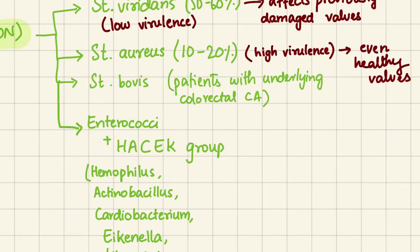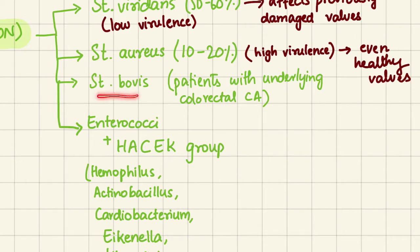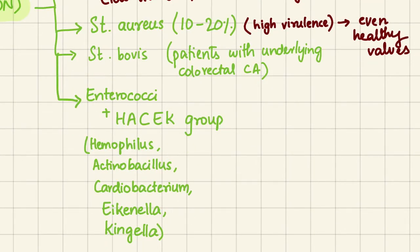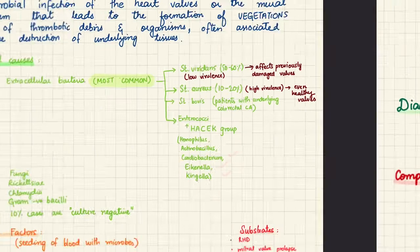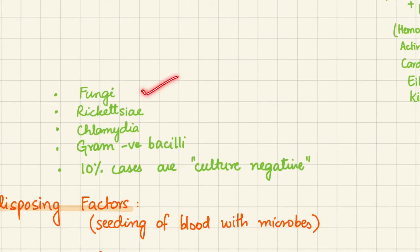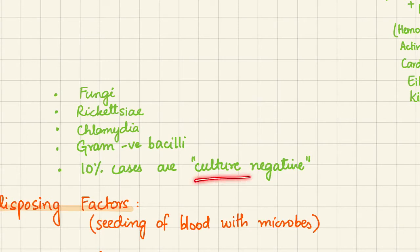Staph aureus is responsible in 10 to 20 percent of cases. It is a highly virulent organism and can damage even healthy valves. Next we have Strep bovis, which affects patients with underlying colorectal carcinoma. Enterococci and the HACEK group are another causative agent — HACEK includes Haemophilus, Actinobacillus, Cardiobacterium, Eikenella, and Kingella.